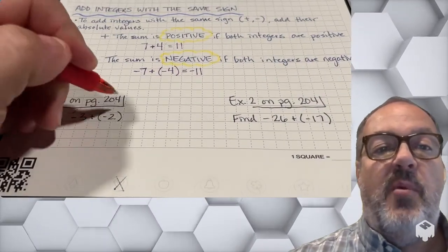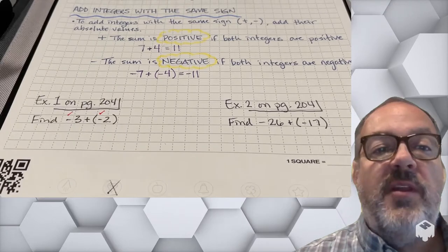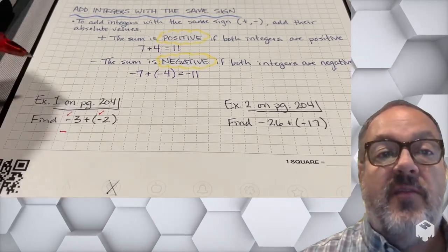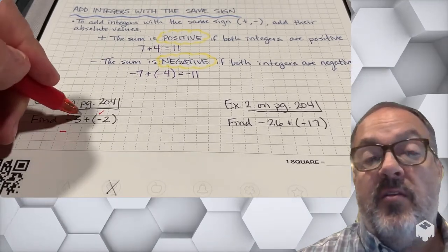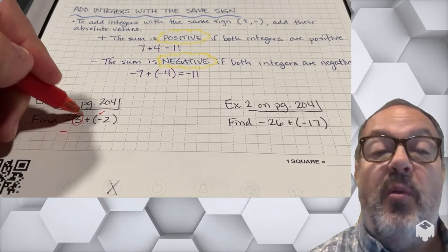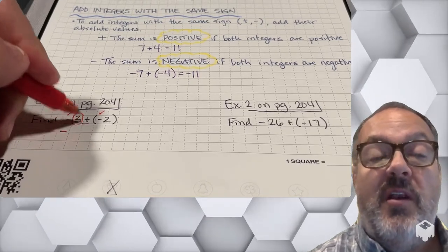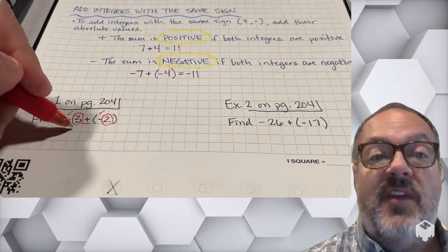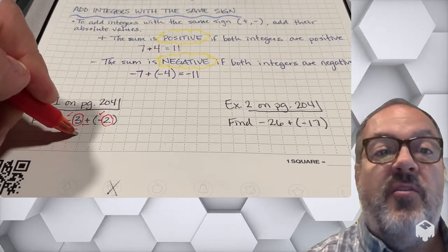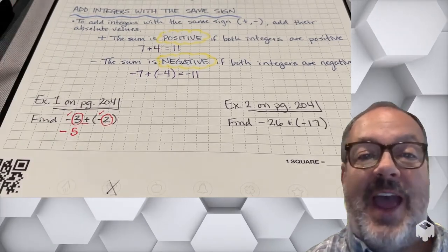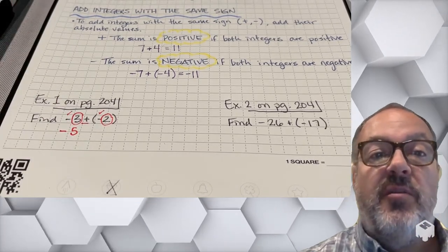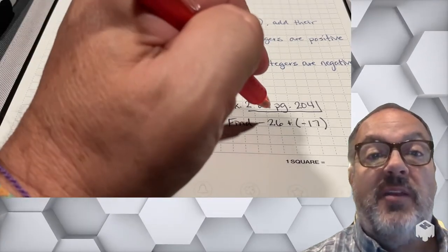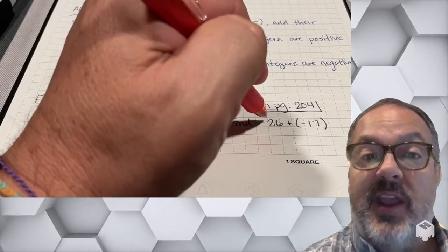In example 1 on page 204, notice that both of my integers are negative. Since both integers are negative, I'm going to have a negative sum, and then all I need to do is add the two values. So 3 plus 2 is 5, meaning negative 3 plus negative 2 is negative 5.